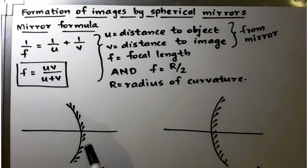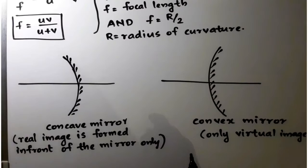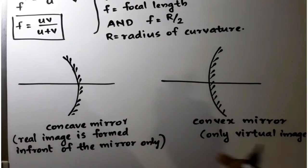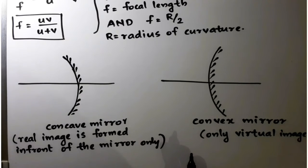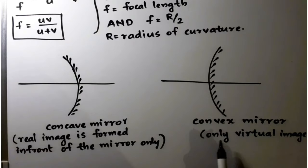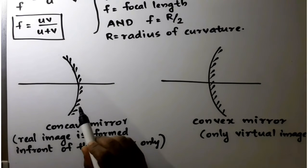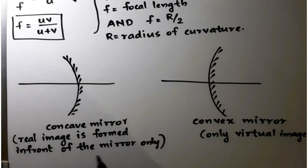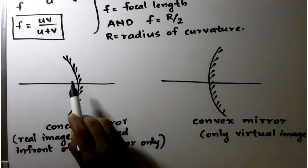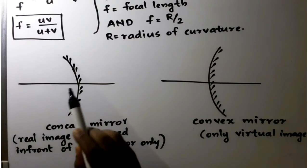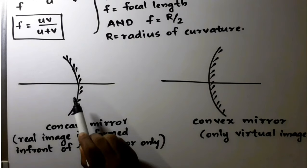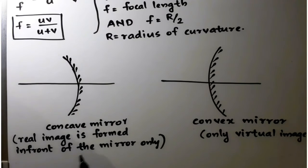In this chapter, we come across two types of spherical mirrors: concave mirror and convex mirror. For convex mirrors, only virtual images can be formed. But for concave mirrors, it can create virtual or real images. Real images are formed in front of the mirror only. If the question states that the image was formed in front of a concave mirror, that implies the image formed is real.